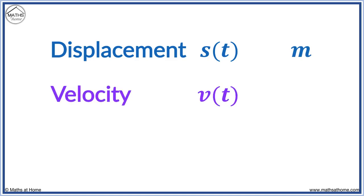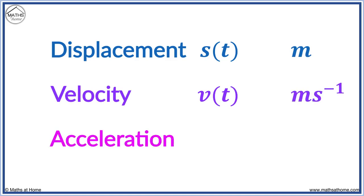Velocity is written with a V and can be measured in meters per second. Acceleration is written with an A and can be measured in meters per second squared.